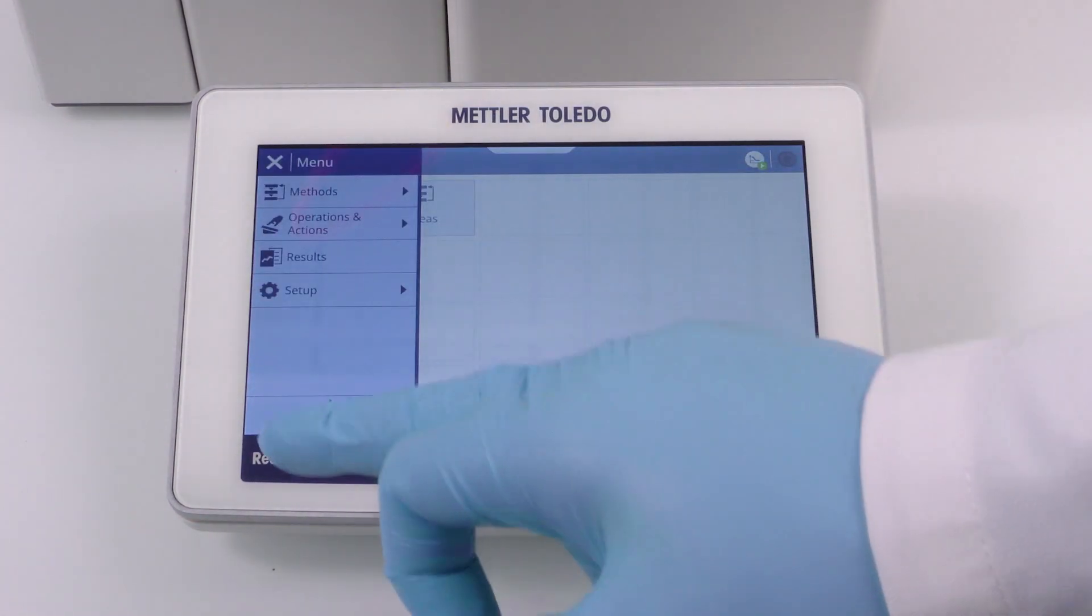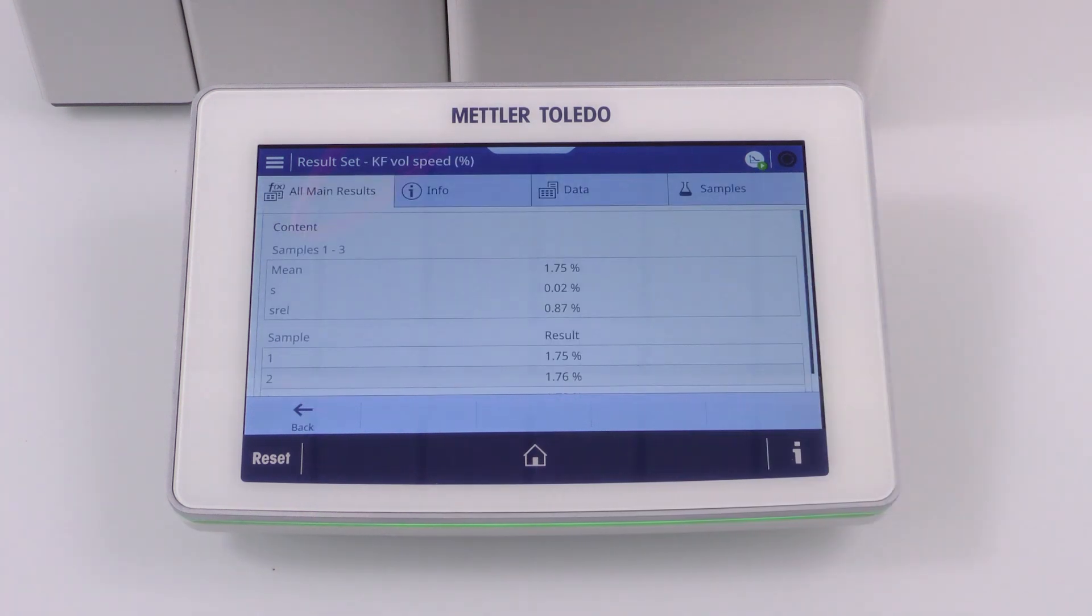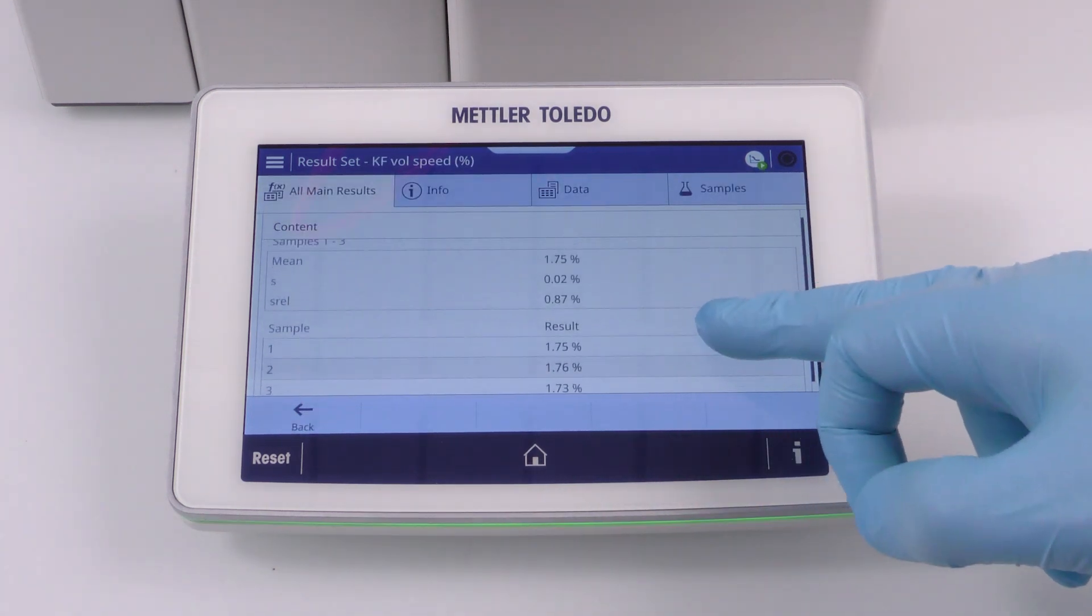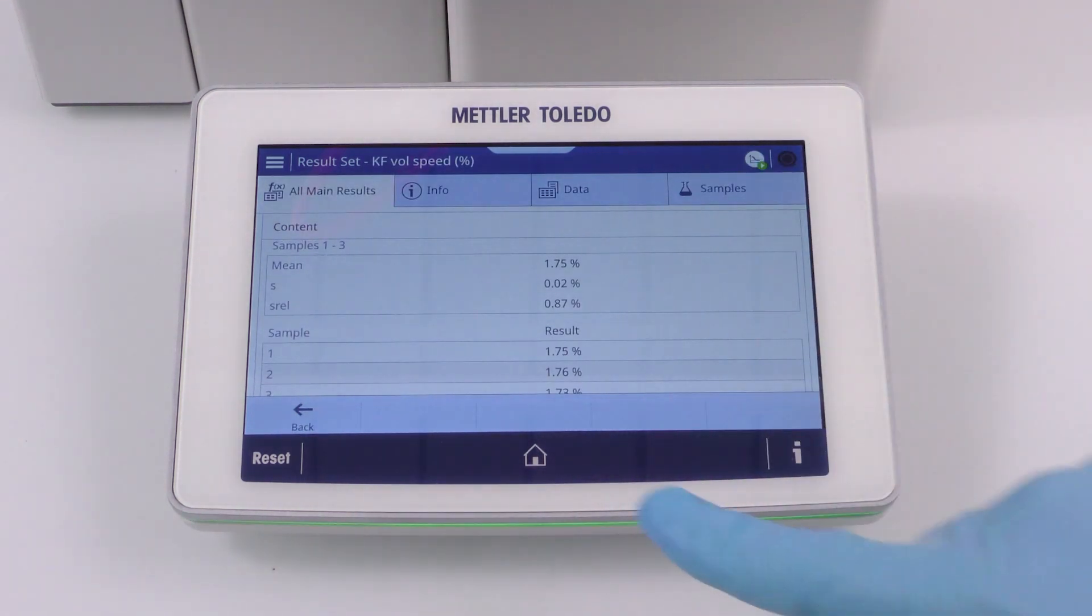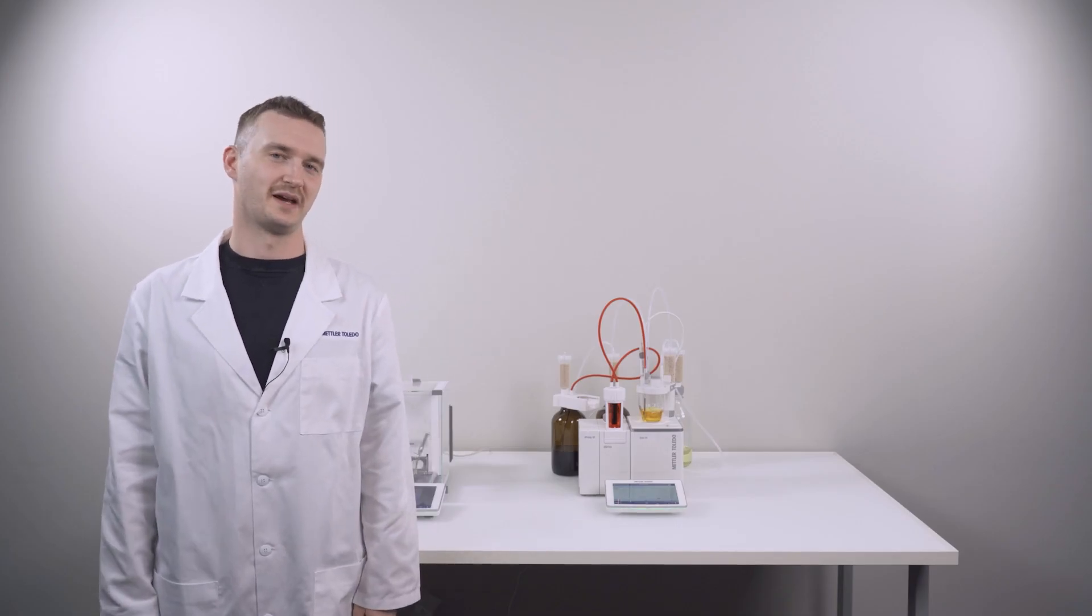The mean and all the statistics of the result set can be found under results. The water content of our industrial ethanol is measured to be 1.75%, which is quite feasible. And that's how easy and fast we can obtain reliable results with our EVA Karl Fischer titrator.